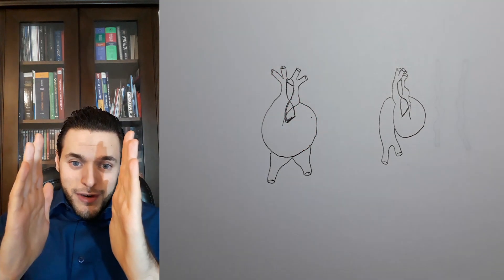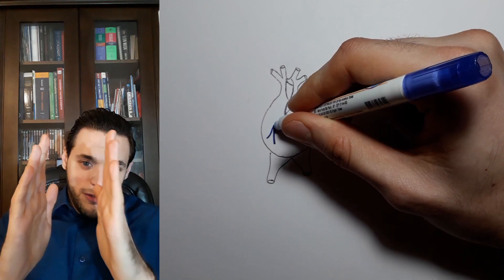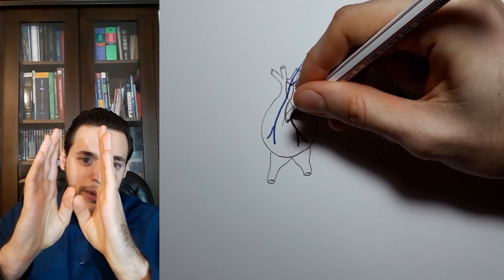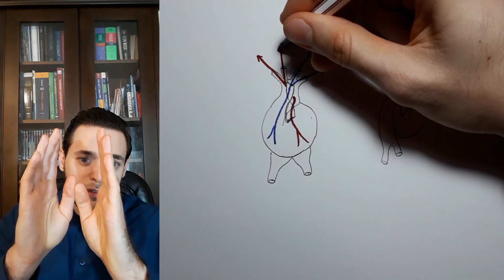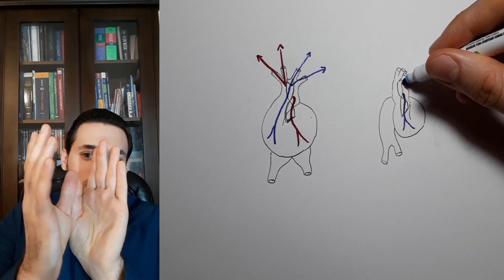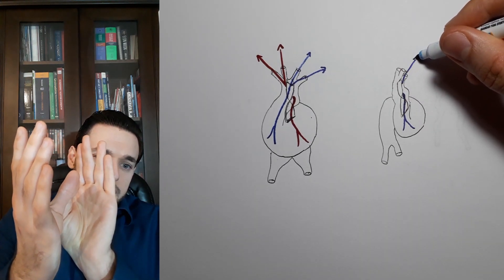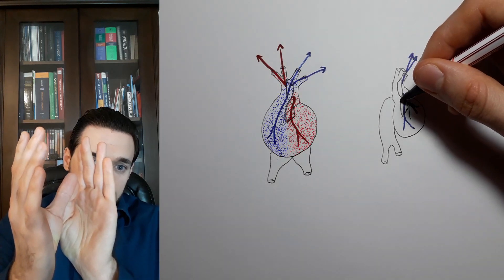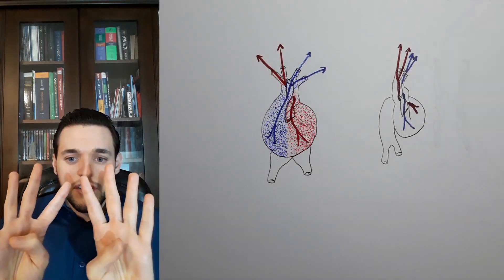In order to divide the truncus arteriosus into these two structures, neural crest cells migrate to the conotruncal and bulbar ridges of the truncus arteriosus and grow the aorticopulmonary septum, a spiral structure that starts dividing outflow from the left ventricle and the right ventricle around the eighth gestational week.